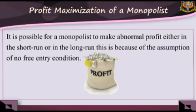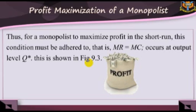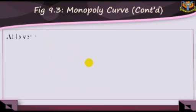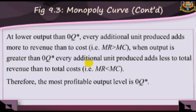In the diagram, the profit maximization output level occurs where MC equals MR. This occurs at output level Q*. At lower output levels than OQ*, every additional unit produced adds more to marginal revenue than cost — that is, marginal revenue is greater than marginal cost. When output is greater than OQ*, every additional unit produced adds less to total revenue than to total cost — that is, MR is less than MC. Therefore, the most profitable output level is OQ*.